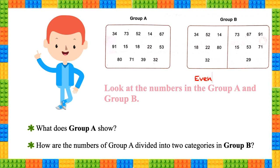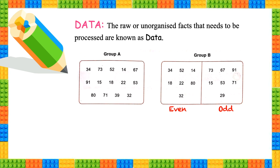Let's look into what is data. The raw or unorganized facts that need to be processed are known as data. Group A, which contained random and unorganized set of numbers, is known as data.